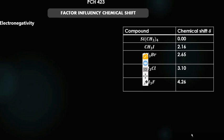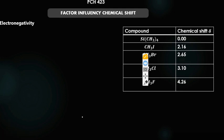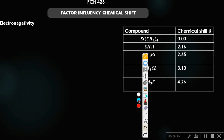In this lecture we are going to continue with the factors that influence chemical shifts. One of the factors we are going to look at is what we call electronegativity — a factor that influences chemical shift.